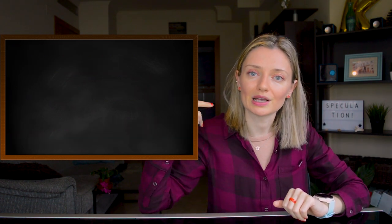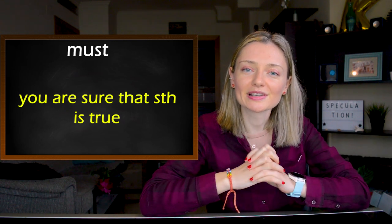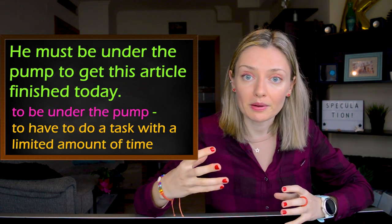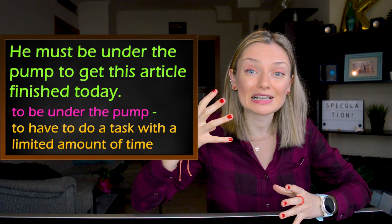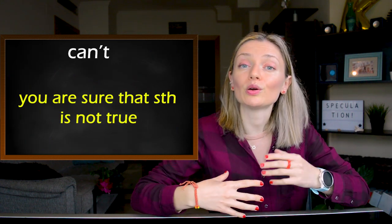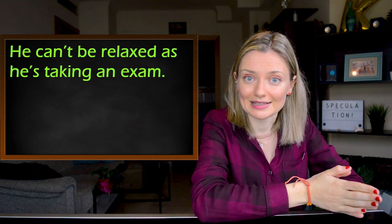Apart from using may, might, and could, we can also use 'must' when we're sure that something is true. For example: 'He must be under the pump to get this article finished today.' The idiom 'to be under the pump' means you have to do a task with a limited amount of time. And one more modal verb is 'can't' when we're sure that something is not true. For example: 'He can't be relaxed as he's taking an exam.' I've got a lesson on five super useful grammar structures focused on modal verbs for speculation and deduction — you can click on the card at the top of the screen.